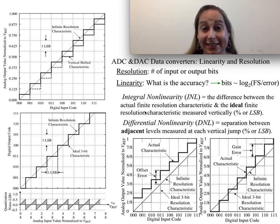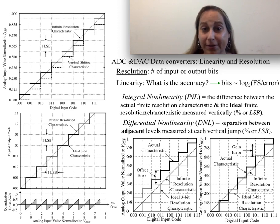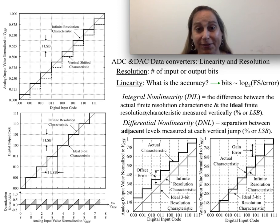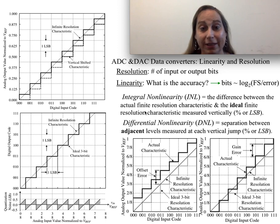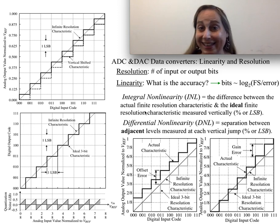I'd like to talk about ADCs and DACs — general data converters — and really the conversation about how good is my ADC or DAC. We often get hold of a device and it says it's a 10-bit, 12-bit, or 18-bit resolution device and we think that's got to be good. It turns out resolution is an interesting term that means one specific thing: how many input bits or output bits do I have? It doesn't say anything else.